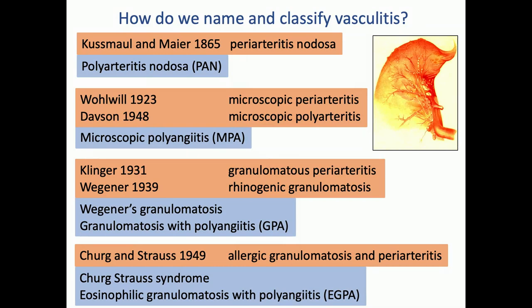Vasculitis has been around a long time, even longer than me. The first classic description was by Cuswell and Meyer in 1865; they described a young man who died of a disease with peculiar rubbery thickenings of the arteries in his stomach, and he called that periarteritis nodosa — later turned into PAN. In the German literature, Volville in 1923 described what he thought was the microscopic form of this disease, and then Davson in the UK in 1948 called it microscopic polyarteritis. The current ACR classification doesn't even contain microscopic polyarteritis because it was described in Europe and not in America. This has now turned into MPA.